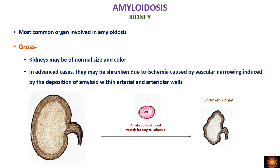Coming to the individual organs — in the kidney, the organ can be of normal size and color, or decreased in size. The decrease in size occurs because the blood vessels are most commonly involved: amyloid deposits in the vessel wall decrease the lumen, causing ischemia and infarction of the kidney, which shrinks the organ.